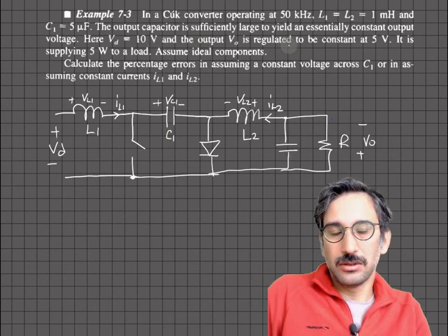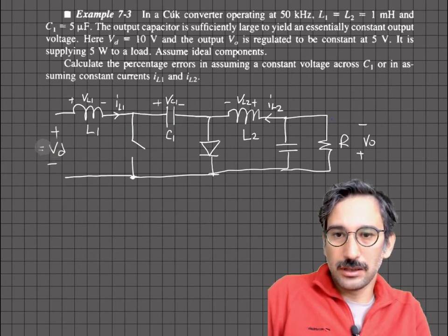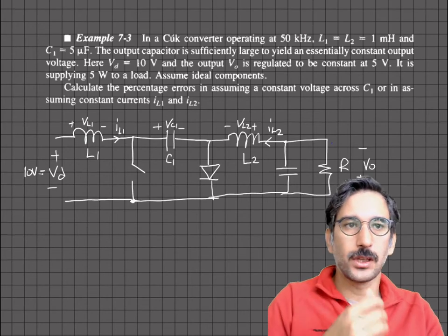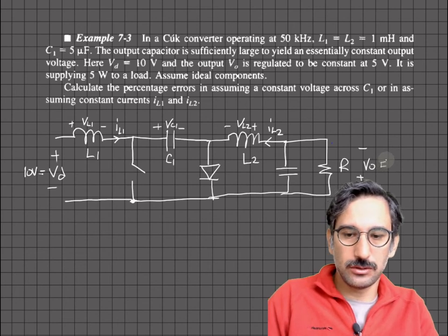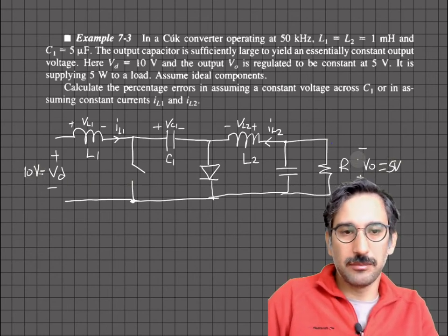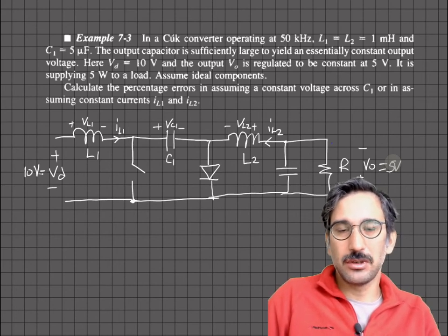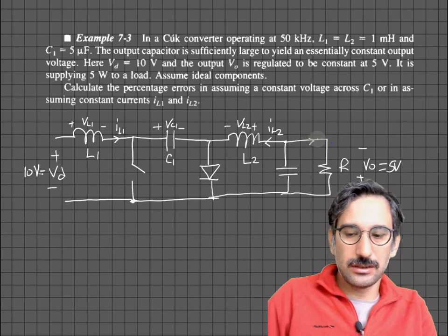The output capacitor is sufficiently large and gives a constant output. The input voltage is 10 volts and the output is 5 volts — remember in some textbooks the polarity is defined as minus-plus giving a negative output voltage, but as long as you are consistent that doesn't make any difference. We are supplying 5 watts.